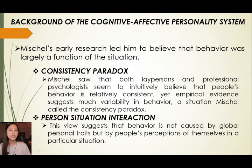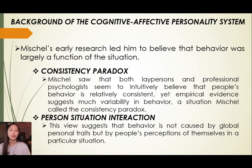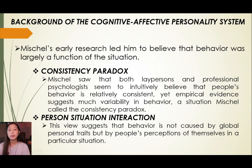Background on the Cognitive Affective Personality System. For some theorists like Hans Eysenck and Gordon Allport, behavior is mostly a product of relatively stable personality traits. However, Walter Mischel objected to this assumption. Mischel's early research led him to believe that behavior was largely a function of the situation — to predict personal behavior, we must consider the situation rather than a fixed trait. Mischel observed that both laypeople and professional psychologists intuitively believe people's behavior is relatively consistent, yet empirical evidence suggests much variability in behavior — a situation he called the consistency paradox.